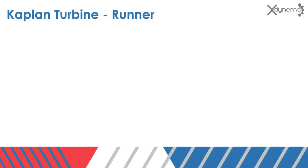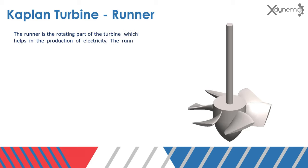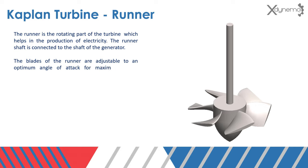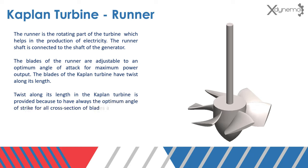Kaplan turbine runner. The runner is the rotating part of the turbine, which helps in the production of electricity. The runner shaft is connected to the shaft of the generator. The blades of the runner are adjustable to optimum angle of attack for maximum power output. The blades of the Kaplan turbine have twist along its length.